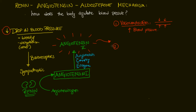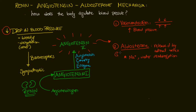The second effect that angiotensin 2 has is it stimulates the adrenal cortex to release aldosterone. Aldosterone is a hormone, part of the endocrine system. It is released by the adrenal cortex, and its functions include sodium and water retention. The target organ of aldosterone is the kidney, which will reabsorb water and sodium.